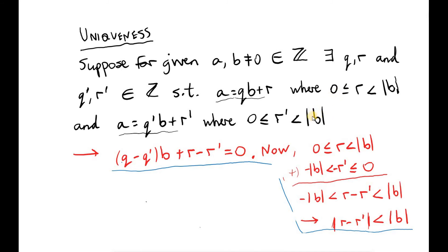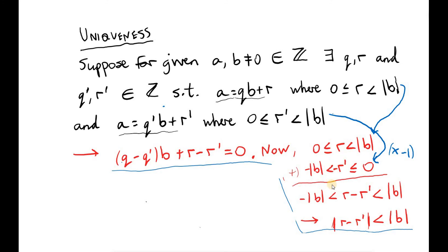Now let's look at the two inequalities for r and r prime. Taking the second inequality, multiplying by minus 1, and writing it under the first, then adding the two inequalities together, we find that the distance between r and r prime is strictly less than the magnitude of b. This uses the fact that minus r prime is strictly greater than minus the magnitude of b, turning the inequality strict.